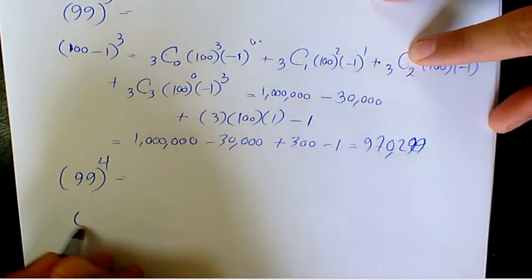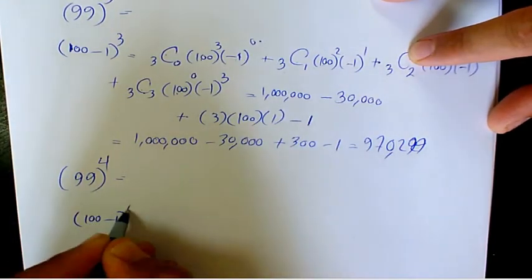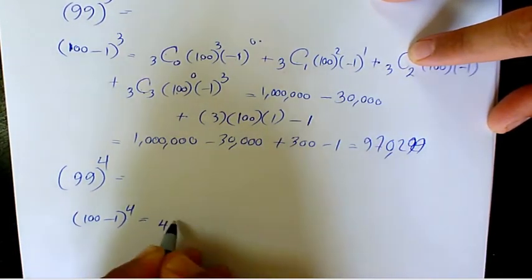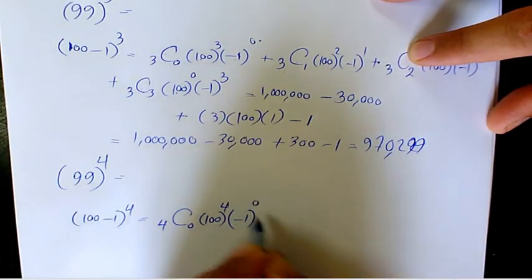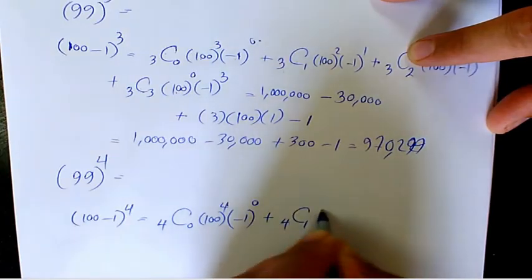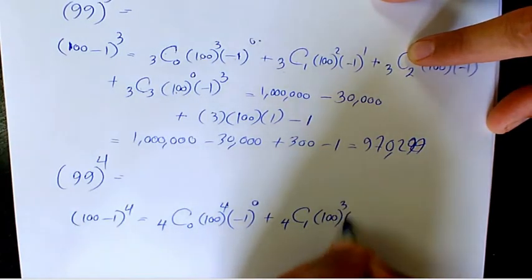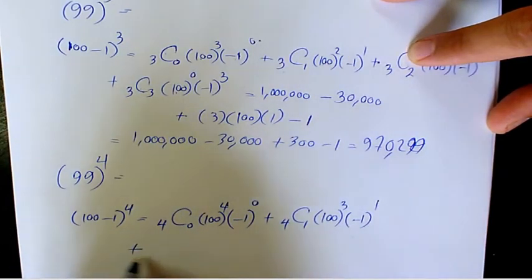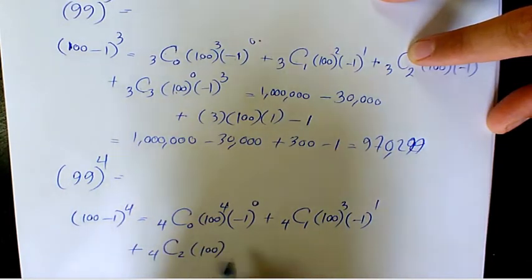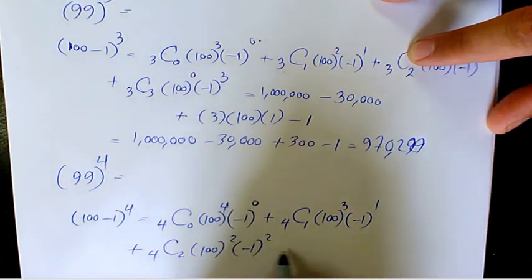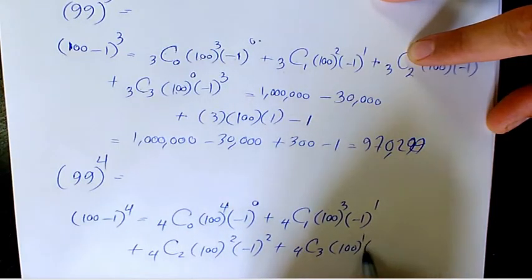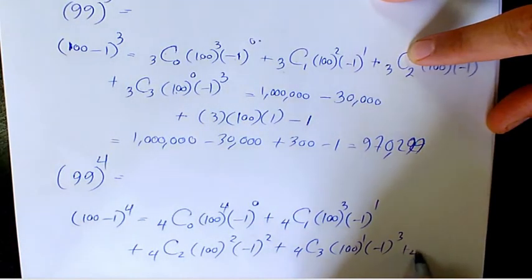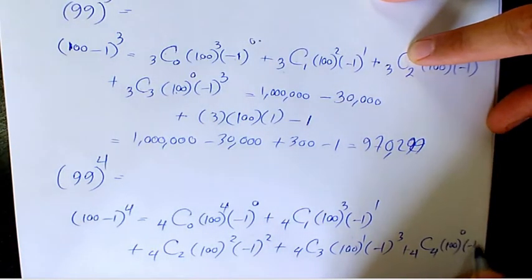The next one is 99 to the power of 4, which is 100 minus 1 to the power of 4. Expanding: 4C0 times 100 to the power of 4 times negative 1 to the power of 0, plus 4C1 times 100 to the power of 3 times negative 1 to the power of 1, plus 4C2 times 100 squared times negative 1 to the power of 2, plus 4C3 times 100 to the power of 1 times negative 1 to the power of 3, plus 4C4 times 100 to the power of 0 times negative 1 to the power of 4.